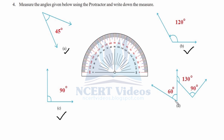From this side, since this side is also 0, we coincide with 0 and match with the internal angles — it comes out to be 60 degrees. Now checking an obtuse angle: we place the point and read from 0 on the left side, and it turns out to be 130 degrees. For the last angle, placing the ray coinciding with 0 and measuring gives 90 degrees. That was question number 4.